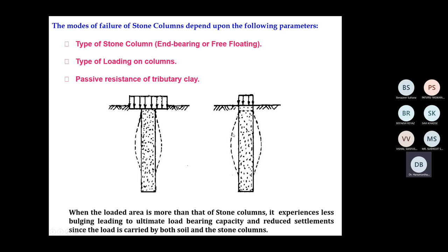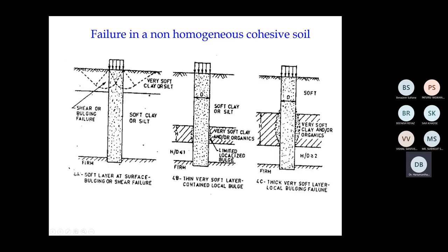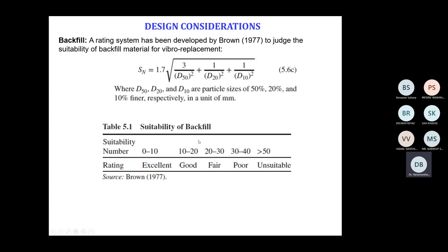For a long column, failure is predominantly by bulging. For both short and long columns: maximum bulging occurs at a depth of 2D, and bulging can extend as deep as four times the diameter of the stone column. For short columns where the bottom stratum is hard, there is end-base punching failure. If there is soft soil in between near the ground surface, it is a bearing capacity failure; at intermediate depth, it is called local bulging.